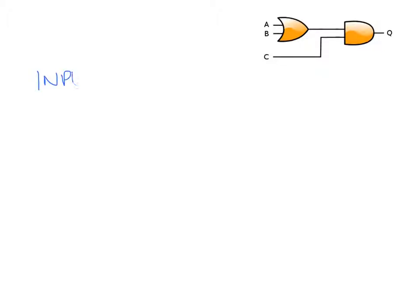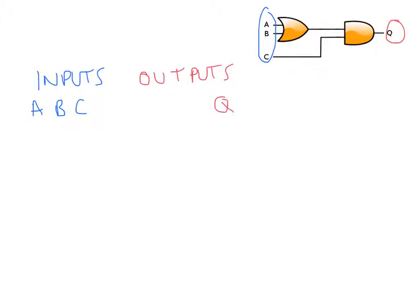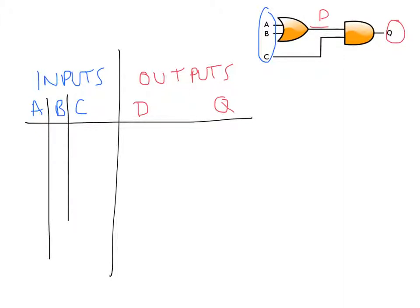The first thing I need to do is draw my truth table. I'm going to write the inputs, of which there are three, and then the outputs. Now it may look like there's only one output, Q, but I also need to consider the output from this logic gate as well, which I'm going to call D — for no other reason than it's the letter after A, B, and C. So I'm going to put D in the middle there. Then I will divide my table up to make it clearer to read. I need to think very carefully about the different combinations of the inputs A, B, and C.